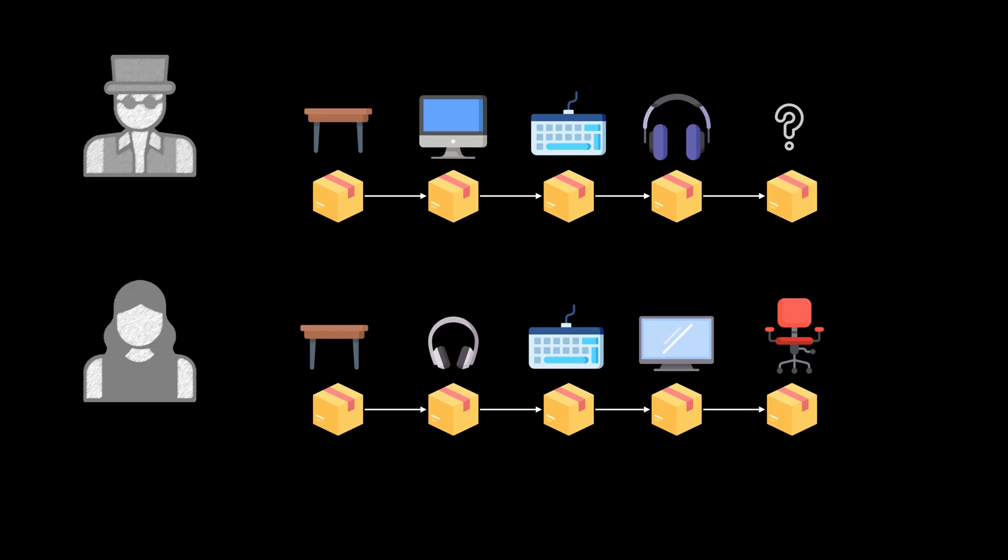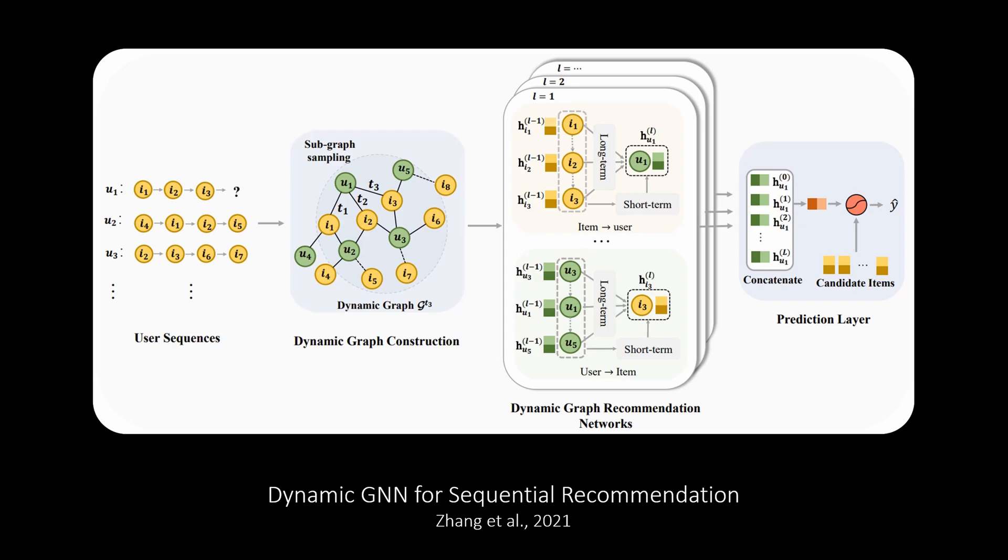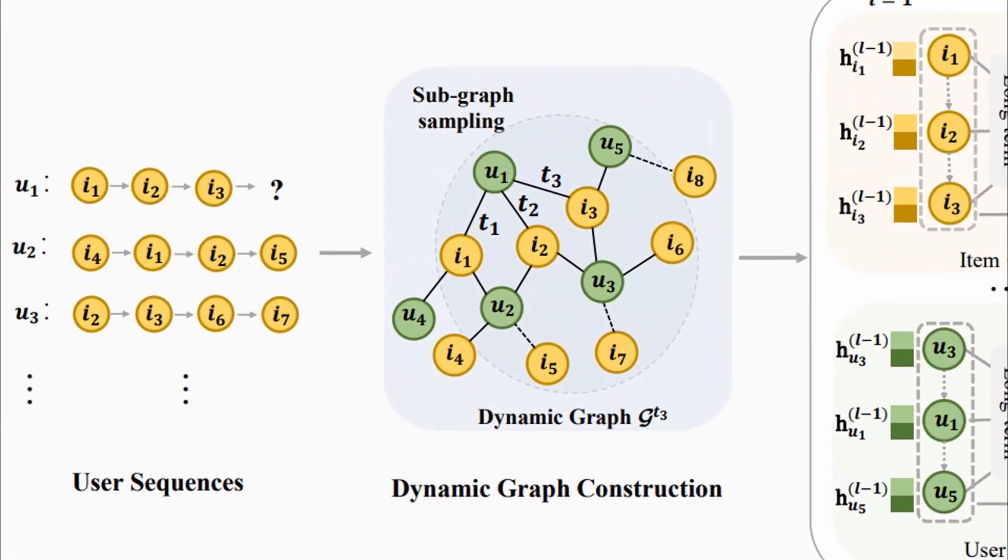Now, how do you model this setup as a graph representation learning task? A recently published paper called Dynamic GNNs for Sequential Recommendation uses temporal GNNs to learn spatial and temporal embeddings. The first step is to convert these item sequences per user into a graph representation. This is done by building a dynamic graph. Let's have a look at our previous example to see how this could look like. A dynamic graph is simply a graph that changes over time. In this case, the edges between the items and users depend on a time step.